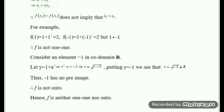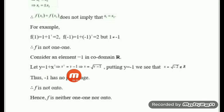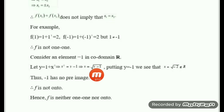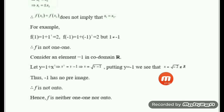Now let us check whether the function is onto. For onto, we set y = 1 plus x squared and solve for x, giving x squared = y minus 1, so x = square root of (y minus 1). We check if this is always real. For y = minus 1, x = square root of minus 2, which is an imaginary number and does not belong to R.